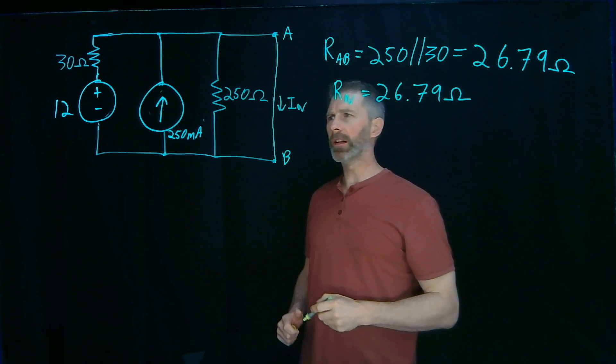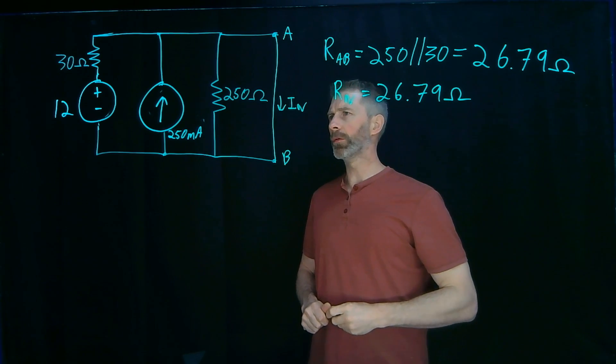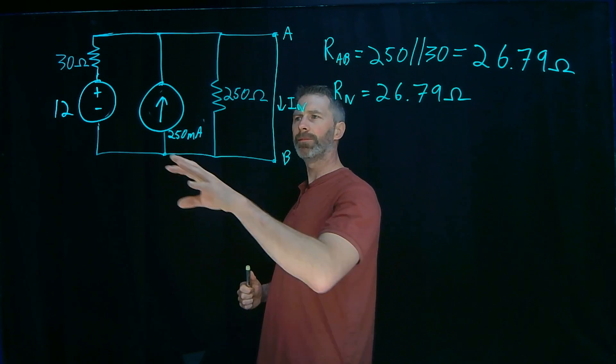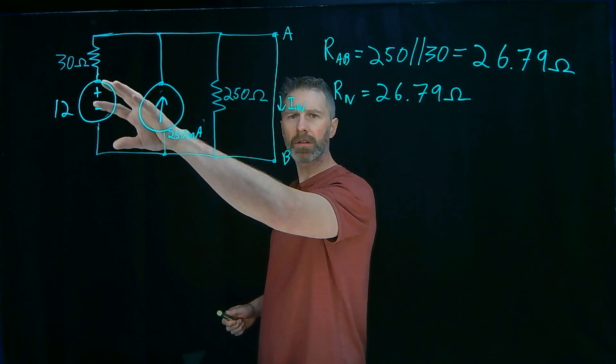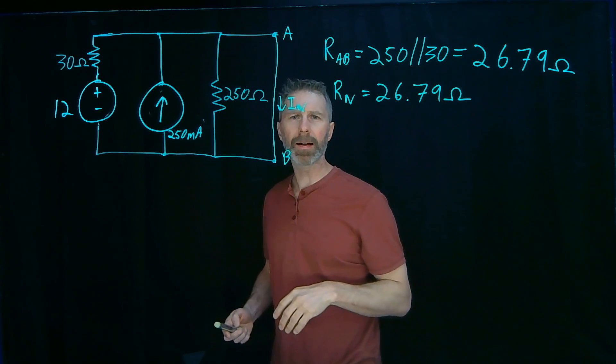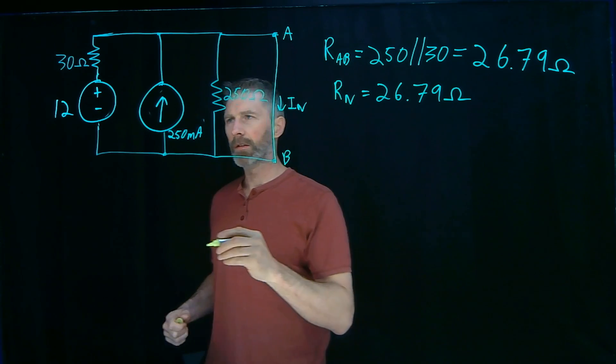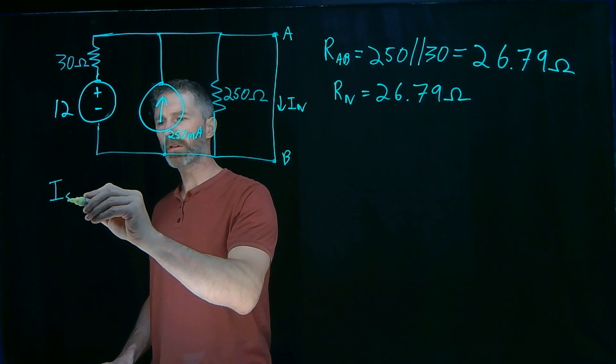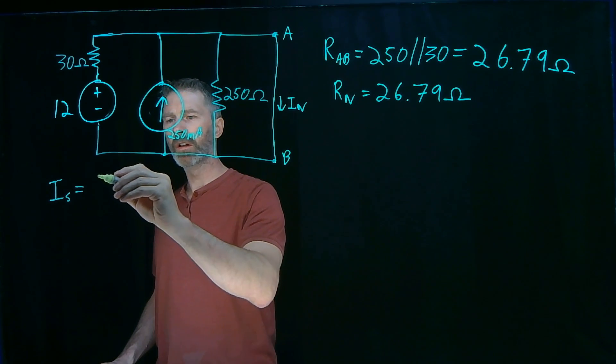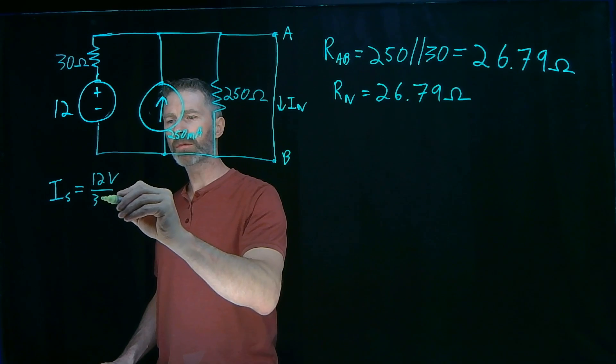This requires a little bit of circuit analysis. I think the way I'm going to approach this is calculate the current source equivalence for that voltage source. To do that conversion, the current source equivalence will be 12 volts divided by 30 ohms.